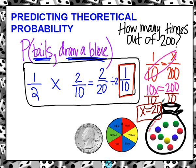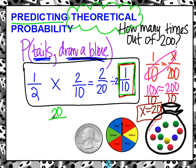Remember, we're still dealing with theoretical probability, so we're not talking about things that have actually happened. We're just making a prediction based on what should happen. So we're saying if we flip a coin and pick a marble, then 20 times out of 200 it should be tails and then blue.